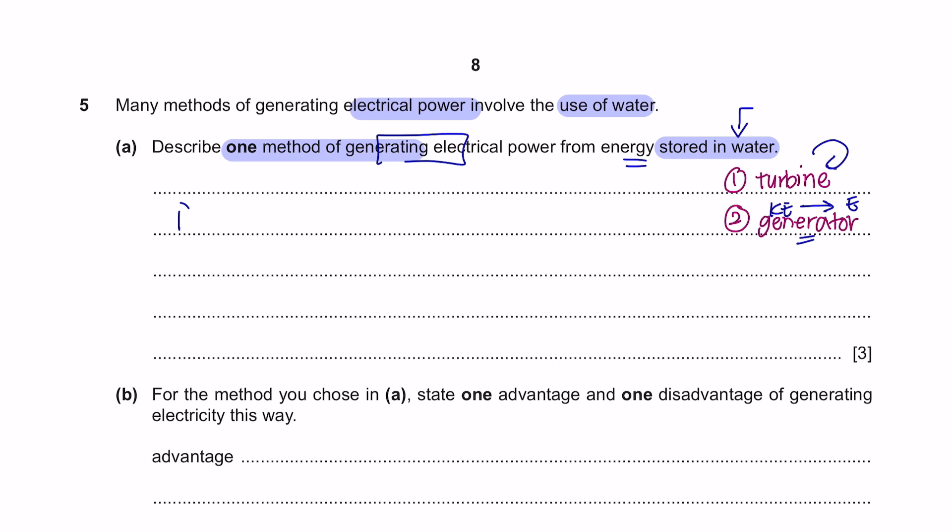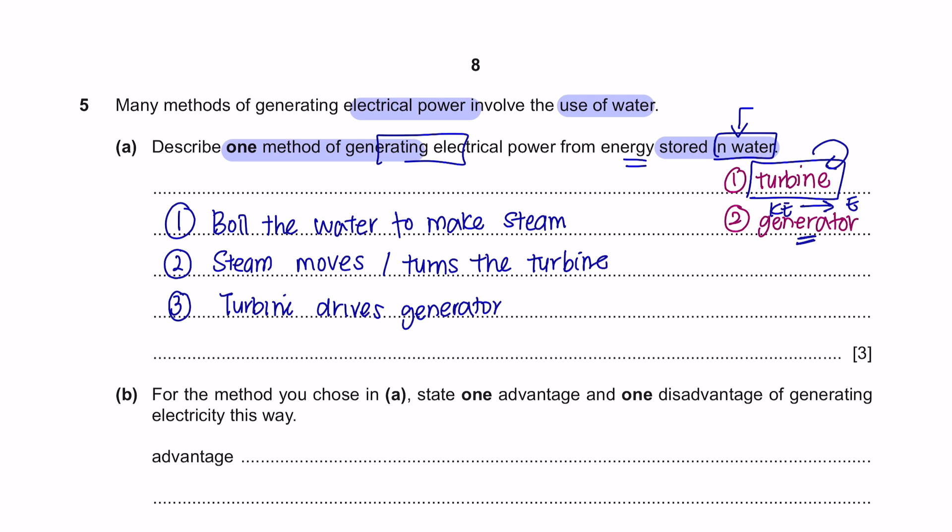So, firstly, let's see how can we release the energy stored in water. So, for water, what we can do is, we can boil the water to make steam. And this steam will have a very high pressure to then turn the turbine. This kinetic energy is what drives the generator. And as mentioned, it will convert kinetic energy into electricity.